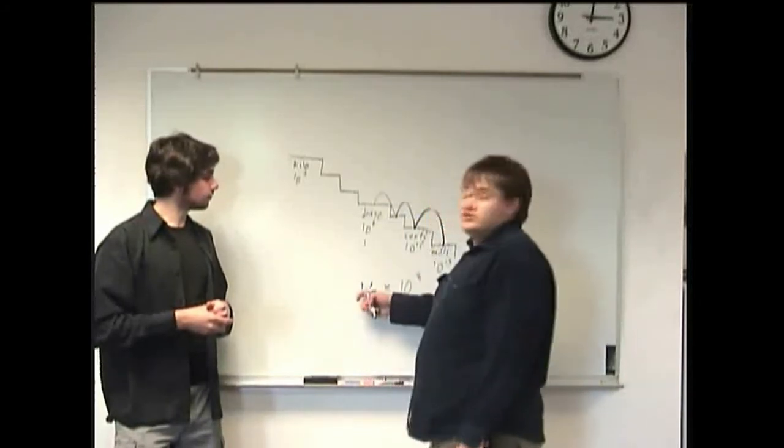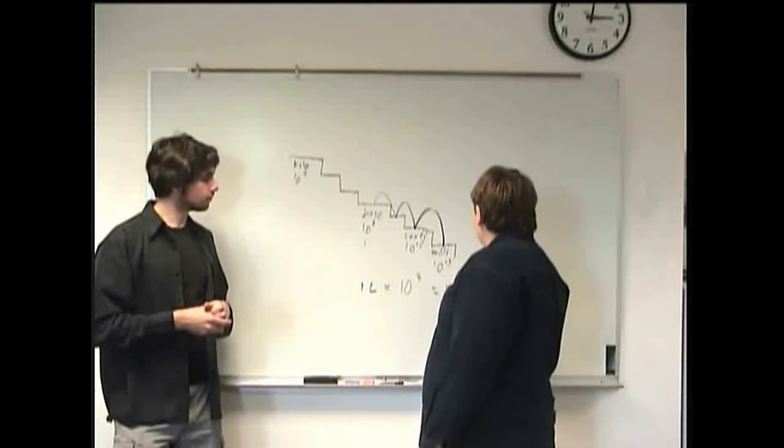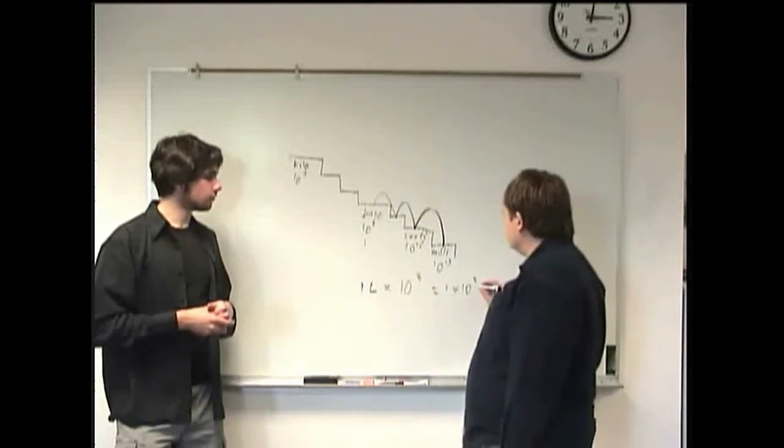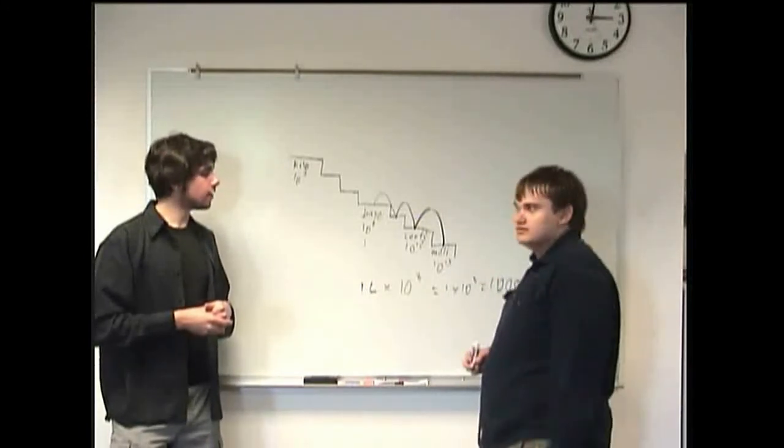So I multiply this one by 10 to the 3, I get 1 times 10 to the 3, which is also 1,000. And then it's milliliters. Okay. That makes sense.